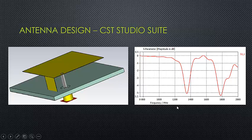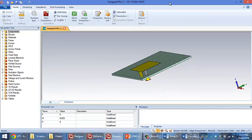The results from the first antenna showed that we have two resonant frequencies, one around 1400 MHz and the other around 1800 MHz. This is our second iteration in the PIFA design in trying to attain a resonant frequency of 710 MHz.